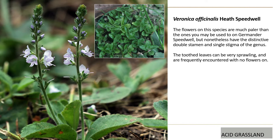Veronica officinalis, heath speedwell — in flower it's quite a pale speedwell compared to germander speedwell with its deep cerise-blue flowers. The leaves are toothed, and before it flowers they can be very sprawly along the ground, with an almost slightly sticky feel when you rub them between finger and thumb. The flowers of all speedwells are very distinctive — a pair of stamens sticking out at an abrupt angle with a single stigma in the middle. It's good to know the leaf shape because you'll often find this not in flower: look for toothy clusters of slightly sticky leaves.